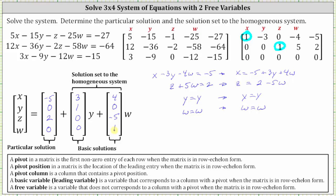This is another way to express the solution to the given system. The first column matrix consisting of the constants from the four equations is the particular solution. The sum involving y and w is the solution set to the corresponding homogeneous system, which would be the system of equations that looks like the one given, except all the right-hand sides would equal zero. I hope you found this helpful.